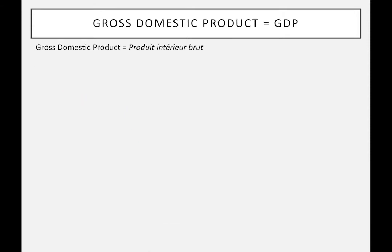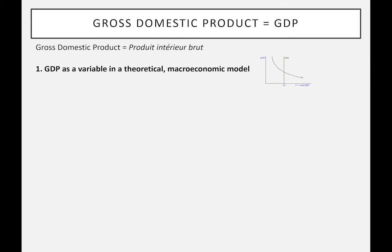So what is GDP precisely? GDP is gross domestic product — in French, 'produit intérieur brut.' I've got different ways of thinking about GDP, but I'll mention three to start with. In my mind, GDP is initially a variable in a theoretical macroeconomic model — it's the axis here.